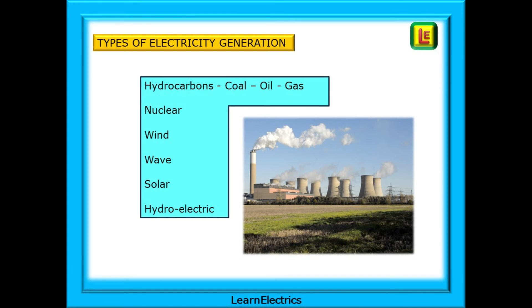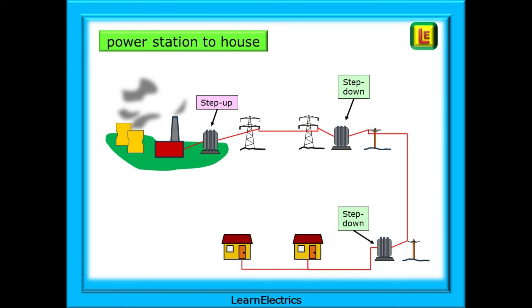There are different methods for producing electricity and some of the more popular are listed here. In a future video, we will look at the different methods in more detail. This little graphic shows the route from the power station to your home. There will be variations on this from location to location, but this will give you an idea of what happens.